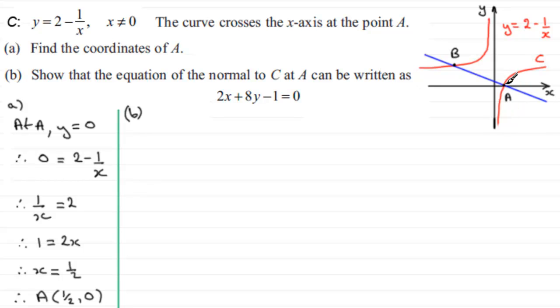And then when I've got that, I'm going to use the form of a straight line. And that form is y minus y1 equals m times x minus x1, where x1, y1 is a point on the line. And we know that point A. x1 is going to be a half and y1 is going to be 0. So, they're the ingredients basically to doing this particular problem.